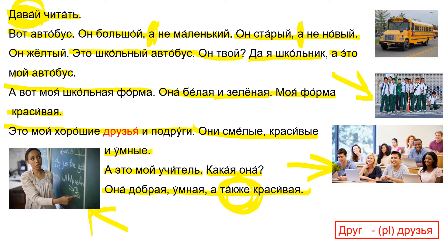Also. And now I think you already noticed a new word — друзья. Друзья is the plural form for the word друг. Друг. It is an exception from the rule and different from every other word. So this plural form is друзья. You have to remember it.